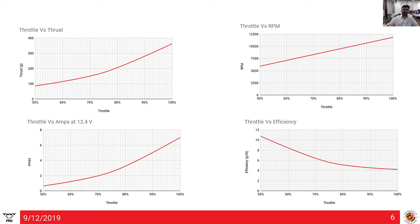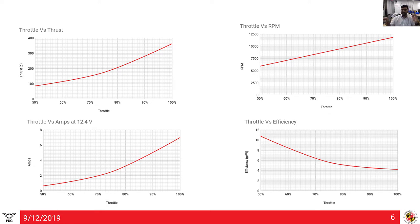Once we take values from the test bench and plot them, we get several curves. The test was conducted at 12.4 volts — the maximum for a 3S battery. Throttle versus thrust is roughly a second-order curve, not linear. Throttle versus RPM is linear. Throttle versus current drawn is again second-order, reaching about 7 to 7.5 amps at maximum. Throttle versus efficiency shows the motor becomes less efficient as throttle increases. Motors are generally designed to take off at about 50% thrust where efficiency is highest.